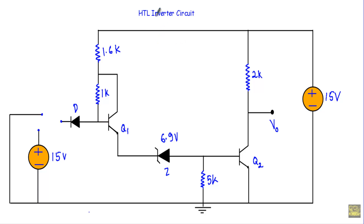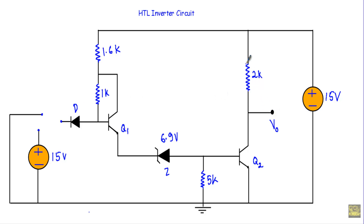In this video I will show you the operation of an HTL inverter circuit. This is the circuit structure of an HTL inverter. As this is an inverter circuit, if I apply logical 0 at the input I will get logical 1, and if I apply logical 1 at the input I will get logical 0 in the output.